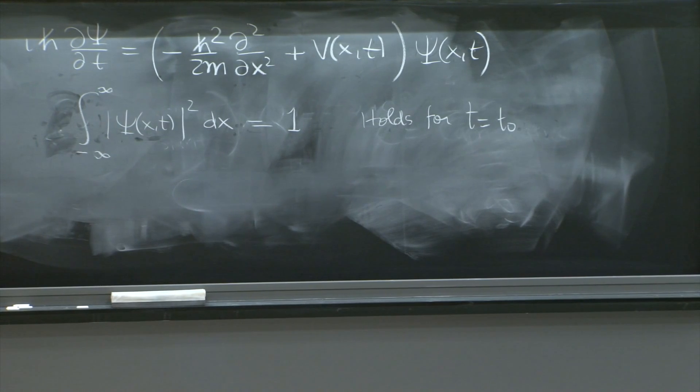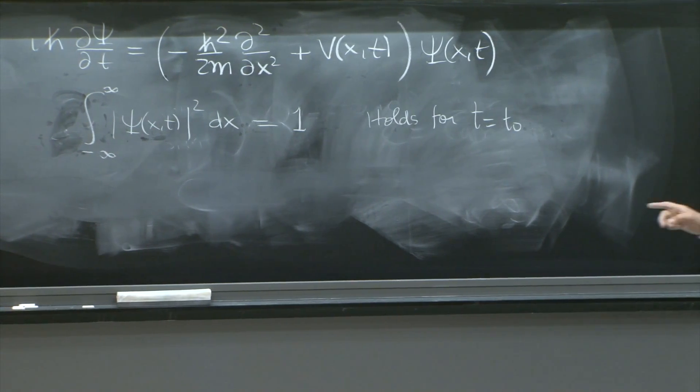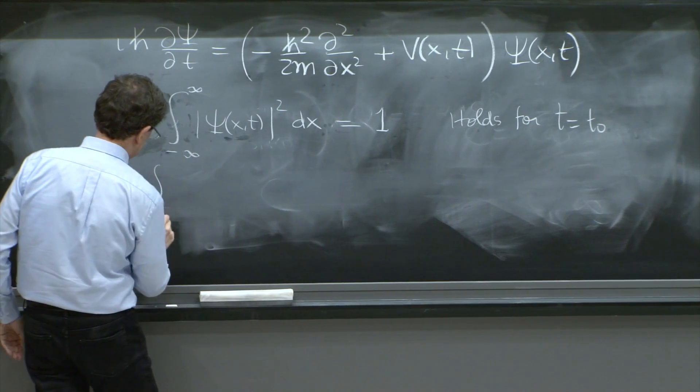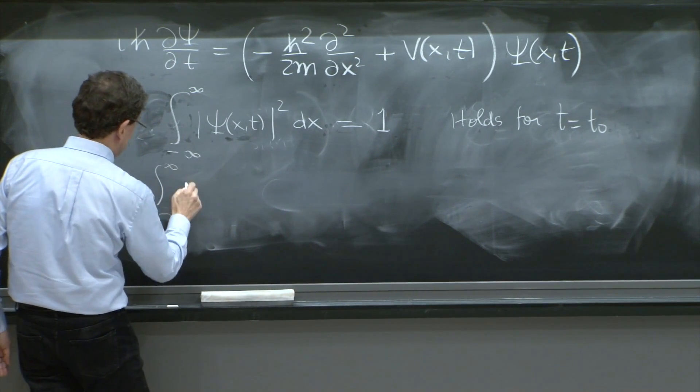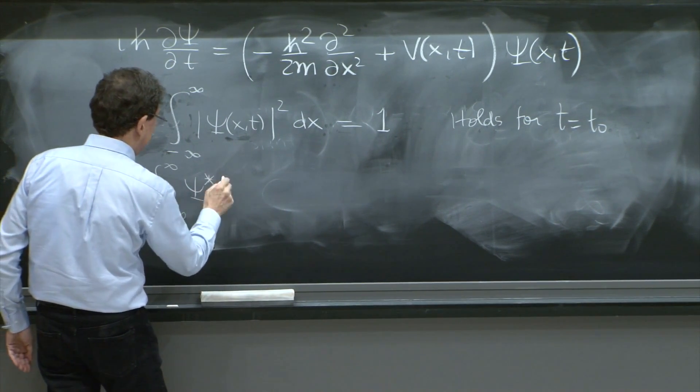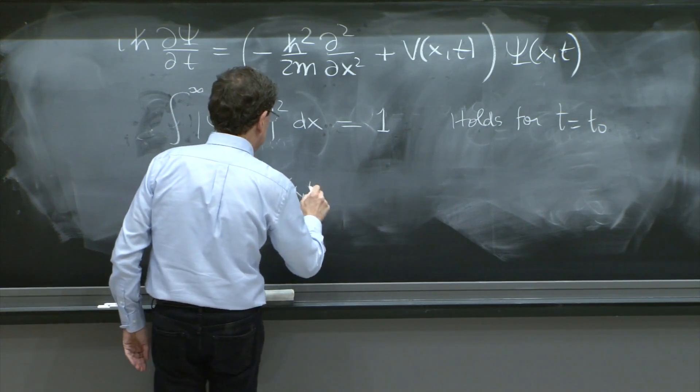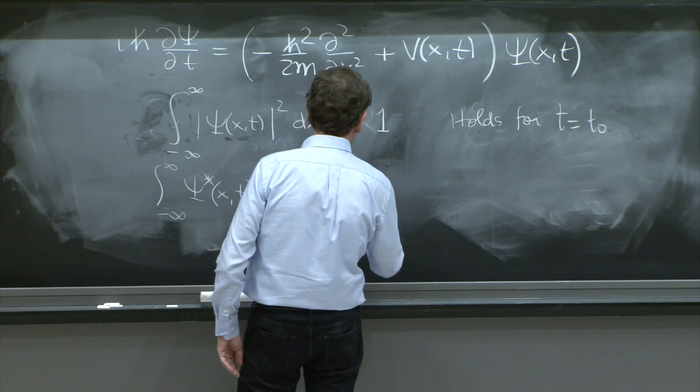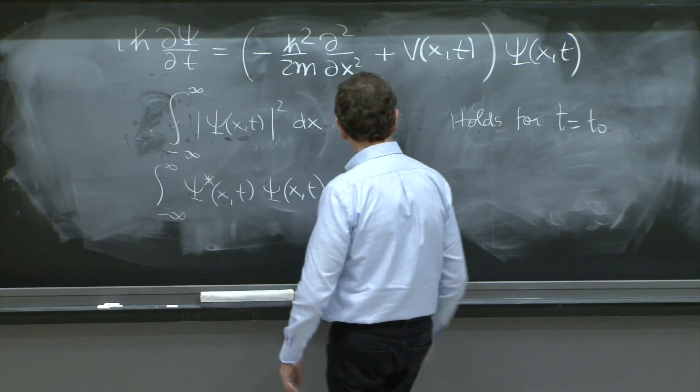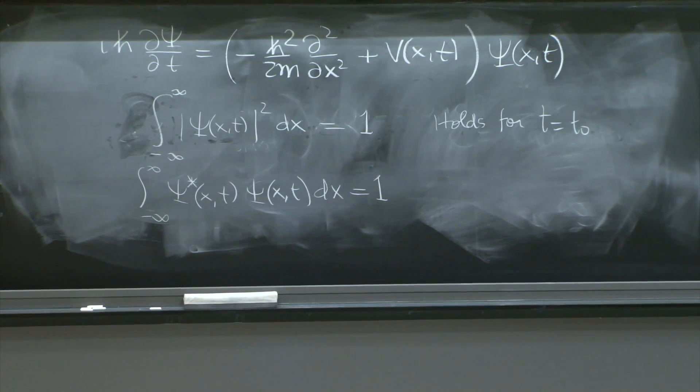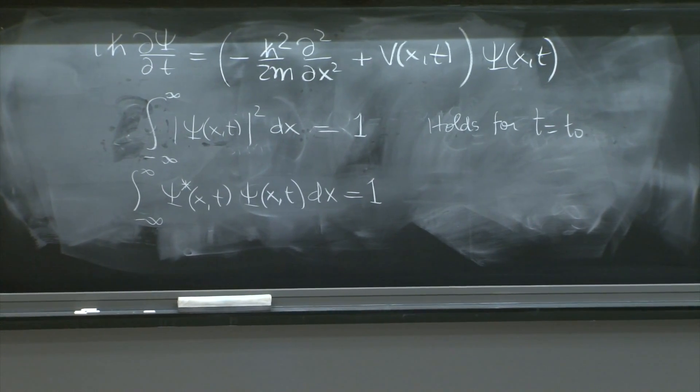When we write an equation like this, and more explicitly this means integral of psi star of x and t, psi of x and t dx equal 1, you can imagine that not all kind of wave functions will satisfy it.